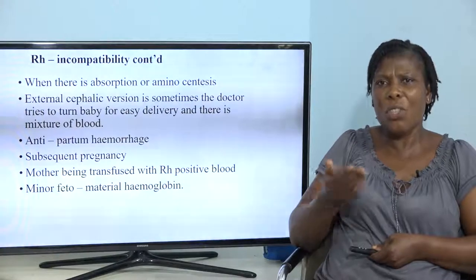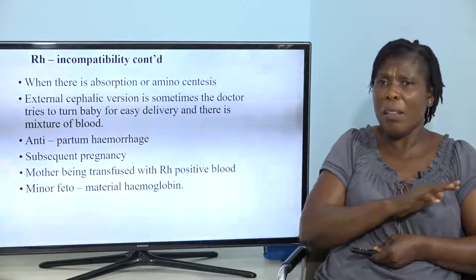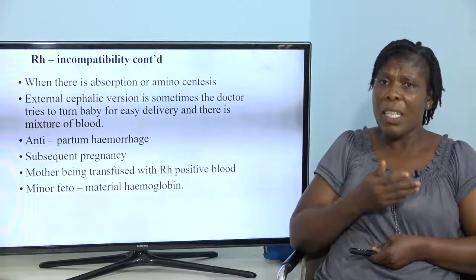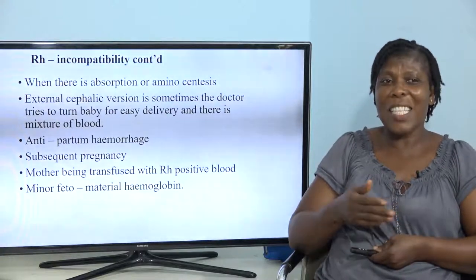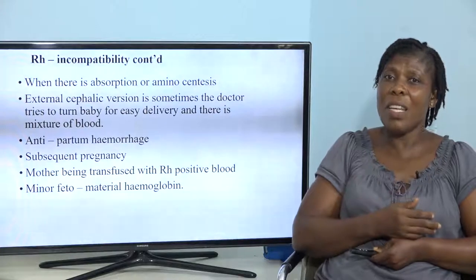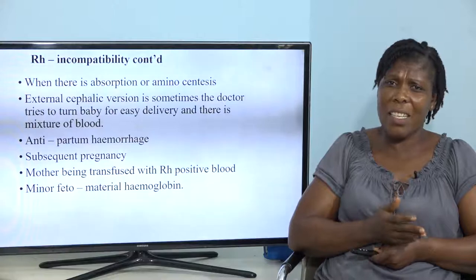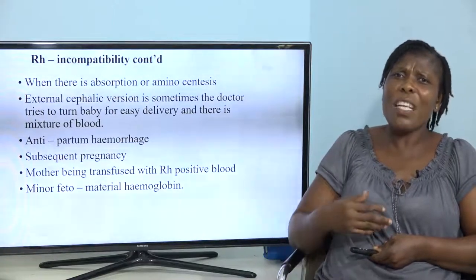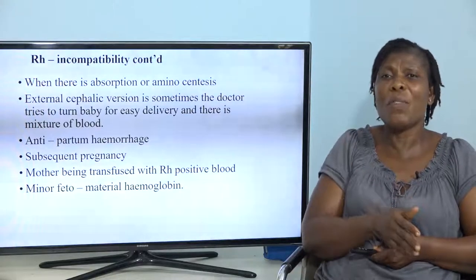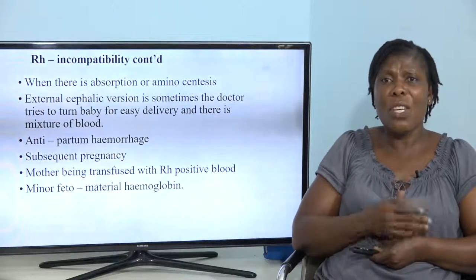And then there are subsequent pregnancies — when the mother continues to get pregnant, the antibodies keep fighting. That is why in most pregnancies you see some couples where the first child is normal, but the second and third child all result in either stillbirth or spontaneous abortion. They keep aborting, and people blame witches and wizards, but it is as a result of rhesus incompatibility. Especially in our rural areas, these examinations are not being carried out to identify if the mother is rhesus negative or positive. When they combine with a father who is rhesus positive, these are the end results — the subsequent pregnancies keep aborting as a result of rhesus incompatibility.